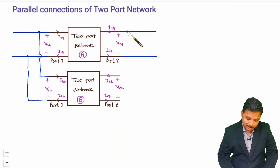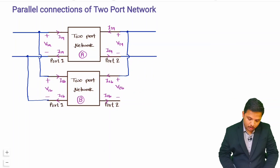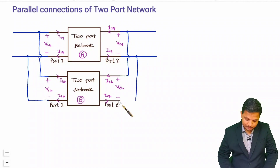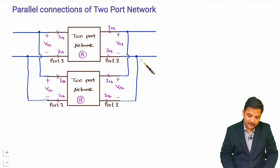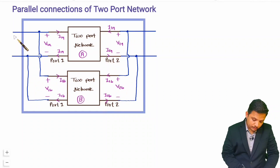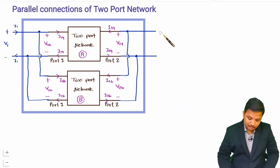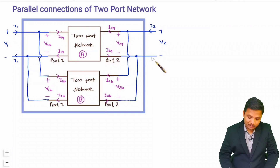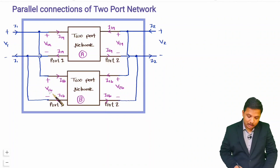Similarly, we have a parallel connection at the output side by connecting port 2 terminals of network A and network B together. This forms the equivalent two-port network. Port 1 of this equivalent network has voltage V1 and current I1, and port 2 has voltage V2 and current I2.